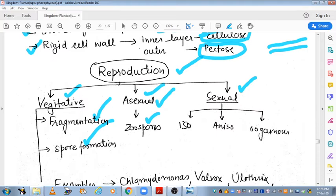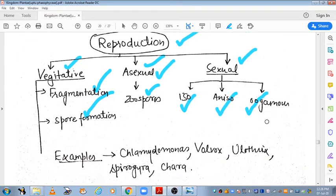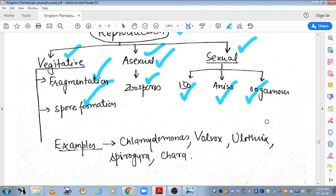Sexual reproduction is of three types. It may be isogamous, anisogamous, or oogamous. Isogamous is when same types of gametes are formed and anisogamous is when different types of gametes form. Oogamous is when male gamete is motile and female gamete is immotile and of large size.